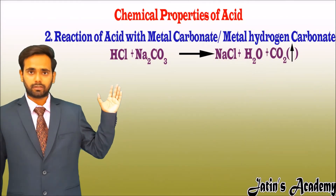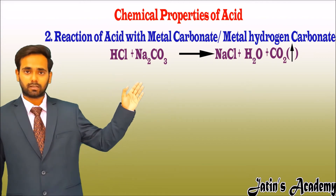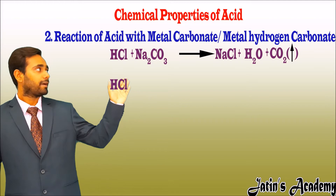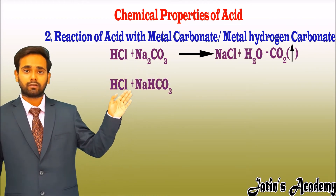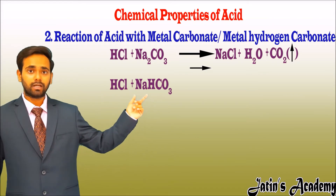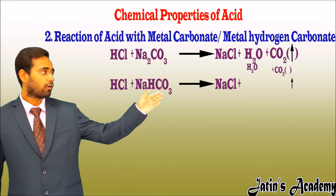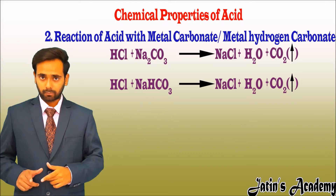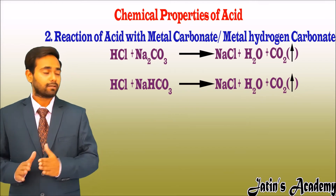Similar to metal carbonate, let's understand the reaction with metal hydrogen carbonate. The acid is the same, HCl, and the metal hydrogen carbonate is sodium hydrogen carbonate (NaHCO₃). When HCl reacts with NaHCO₃, it gives NaCl, water, and carbon dioxide gas. This means metal carbonate and metal hydrogen carbonate both give the same products when they react with acid.